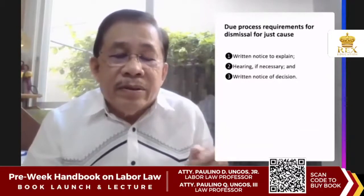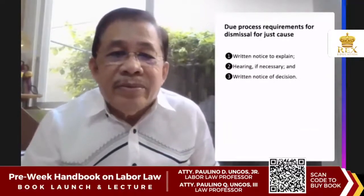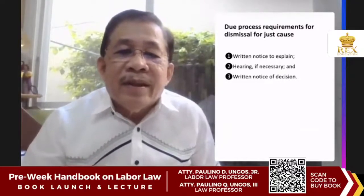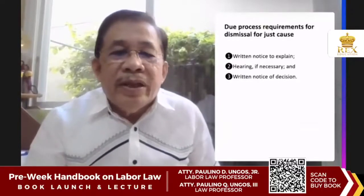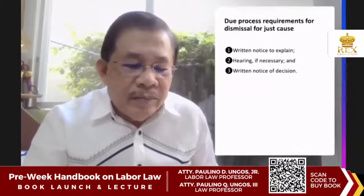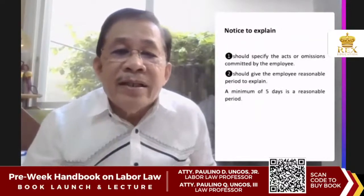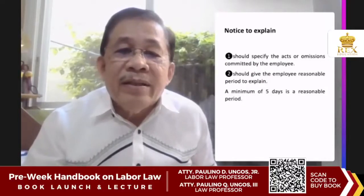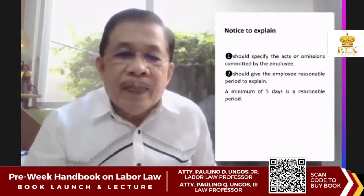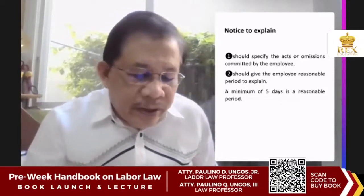Under the law, employers are required to issue a written notice to explain, conduct a hearing if necessary, and issue a written notice of decision. The notice to explain must be in writing and should specify the acts or omissions committed by the employee. A general statement as to the offense will not suffice. The notice to explain should also give the employee a reasonable period within which to explain.